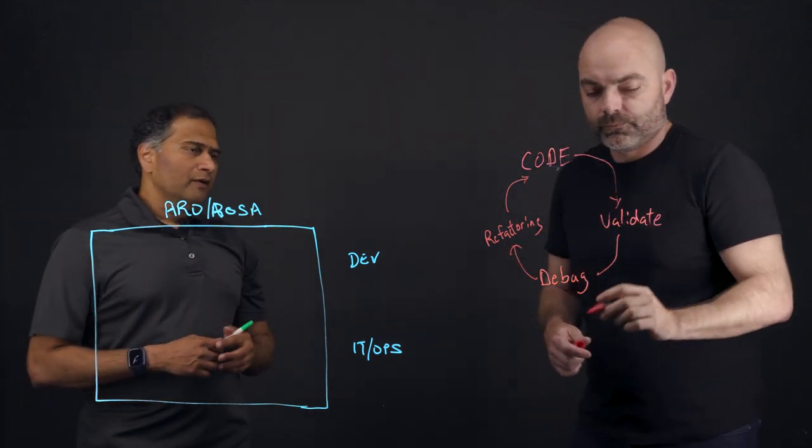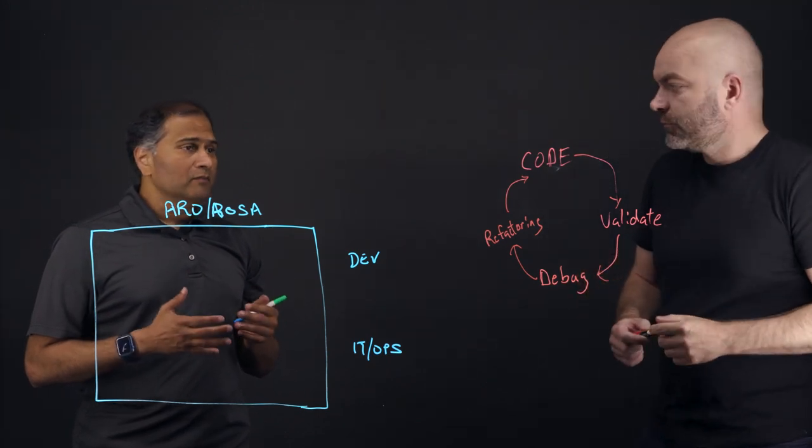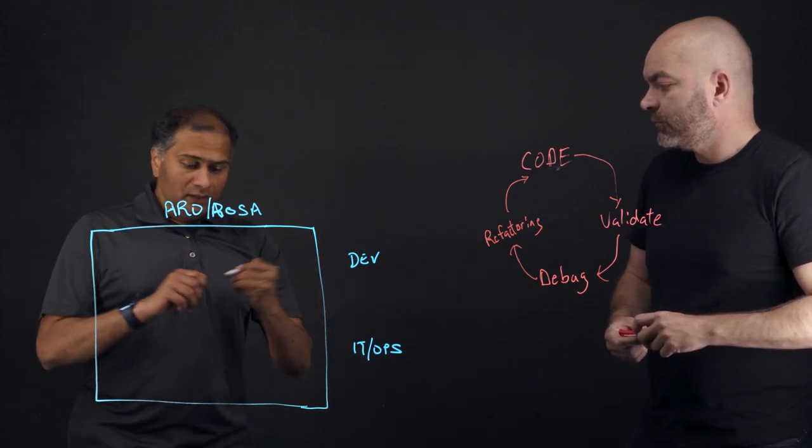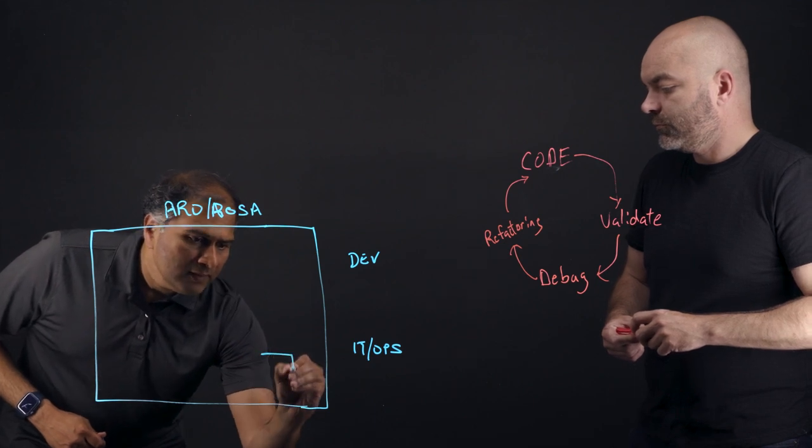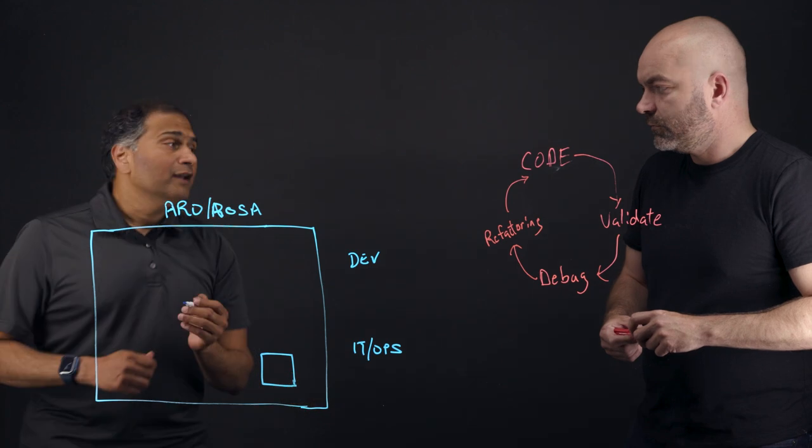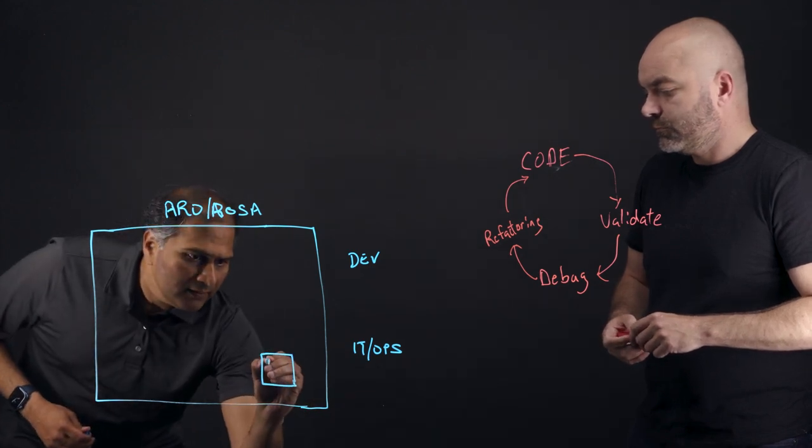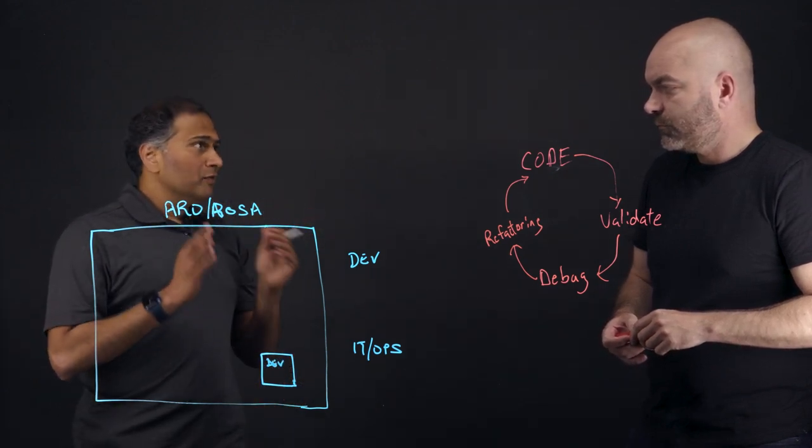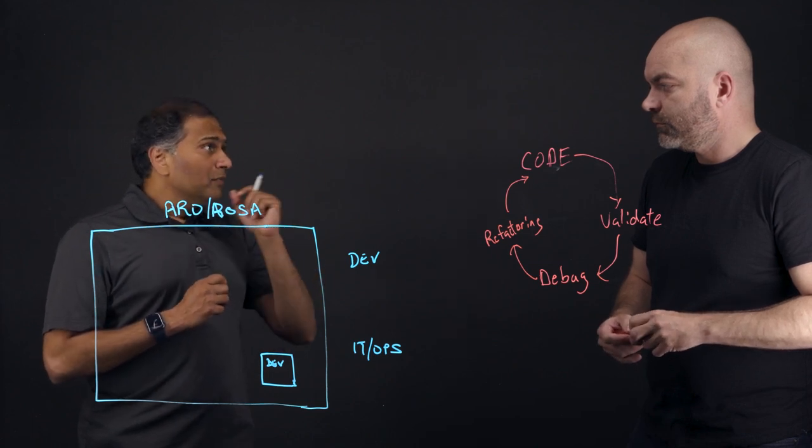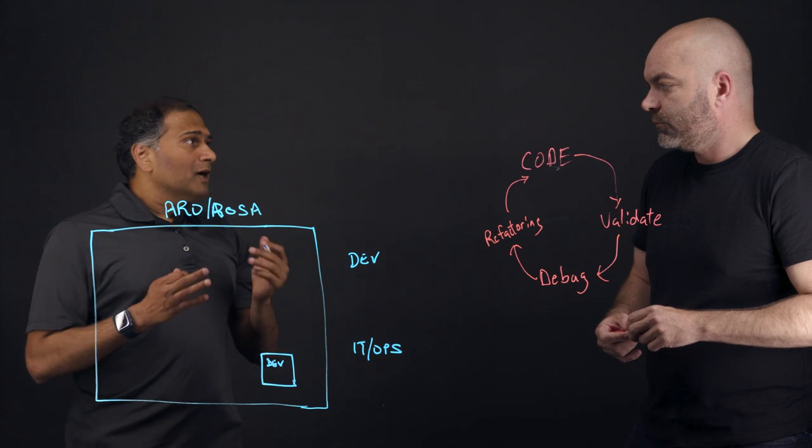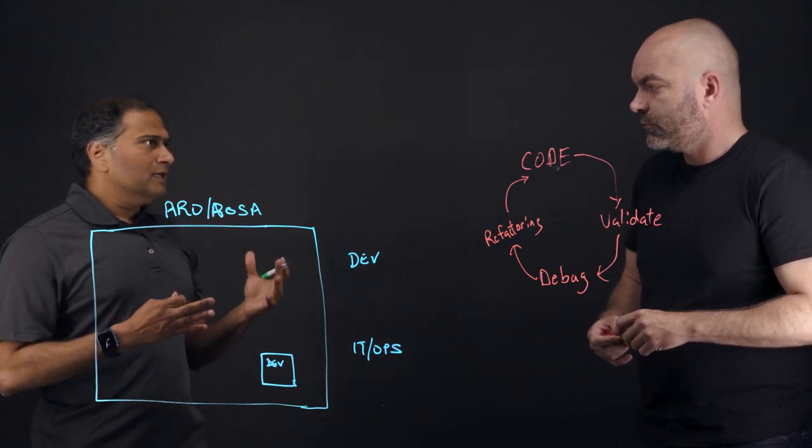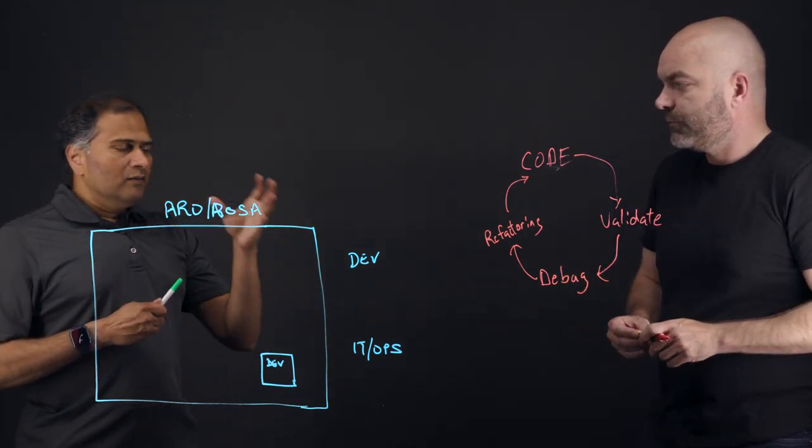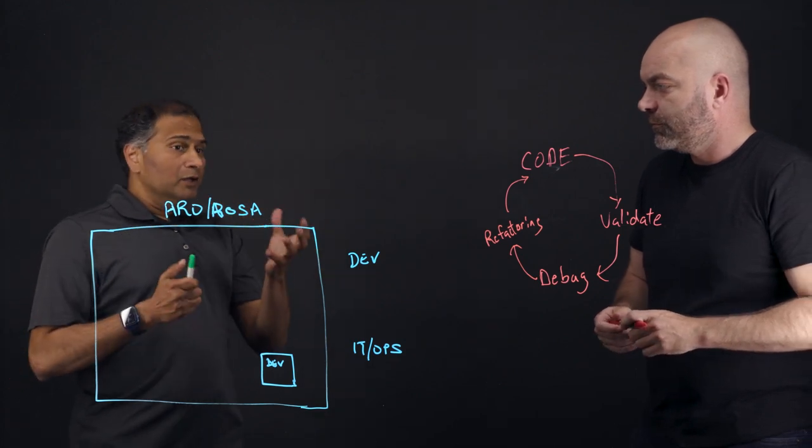So this is basically the inner loop where a developer is very focused on writing code. They don't care about what the infrastructure is. And this is where Dev Spaces sits. Dev Spaces sits within Managed OpenShift. And when you think about it, the developer has worked on their code, it works, but then they need to commit to the repository. And once they commit to the repository, it goes through the CI/CD pipeline. And we would call that the outer loop, where they would basically publish their code and test it and then deploy it.